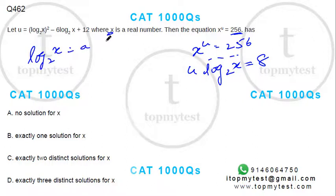So u will become a² minus 6a plus 12, times a, equals 8.